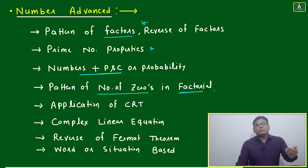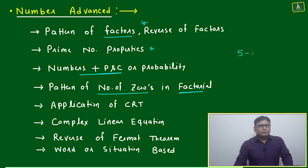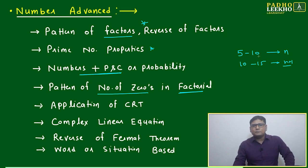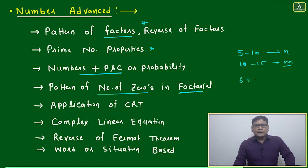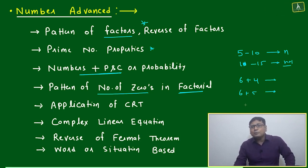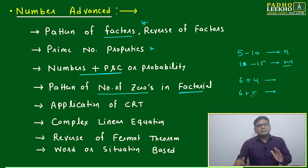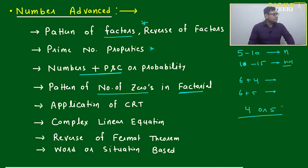If you use PNC in a smart way, the question becomes easy. Another important area is the pattern of number of zeros in factorial, because it creates a big loop. For example, from five to ten, if you take numbers in terms of factorial, the number of zeros from n equals 10 to 15 jumps by one. From five to one, the number of zeros changes when you add eleven. If you add six and four, zeros don't change; if you add six and five, zeros change by one. This same pattern applied to a variable with a four or five digit number makes for a very good question.